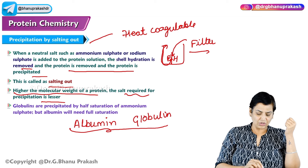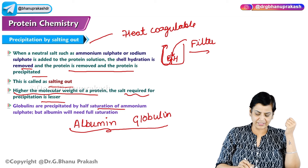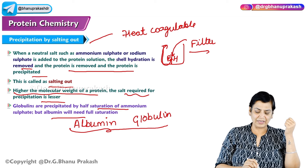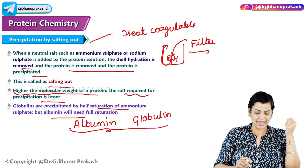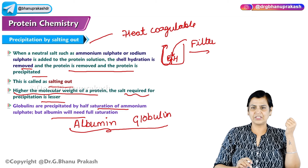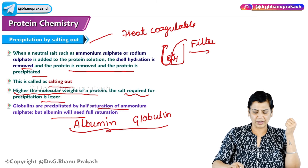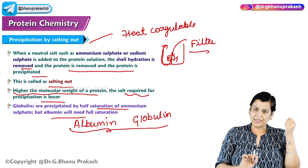Globulins are precipitated by half saturation and albumins will need full saturation. So this is the precipitation technique for proteins.